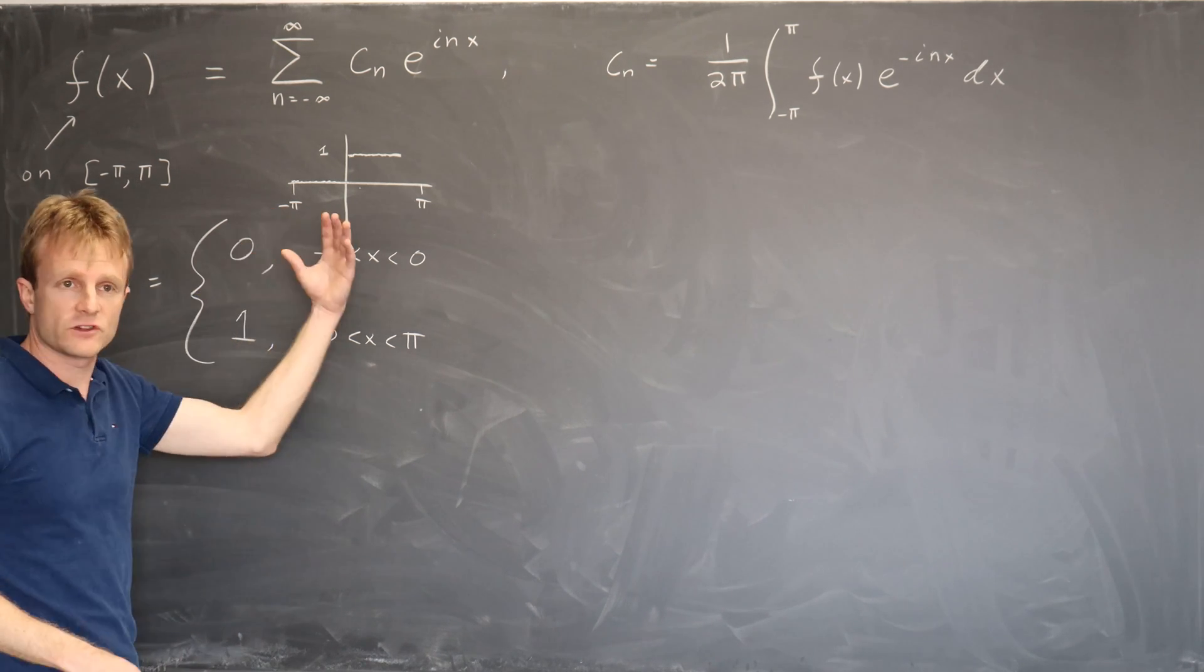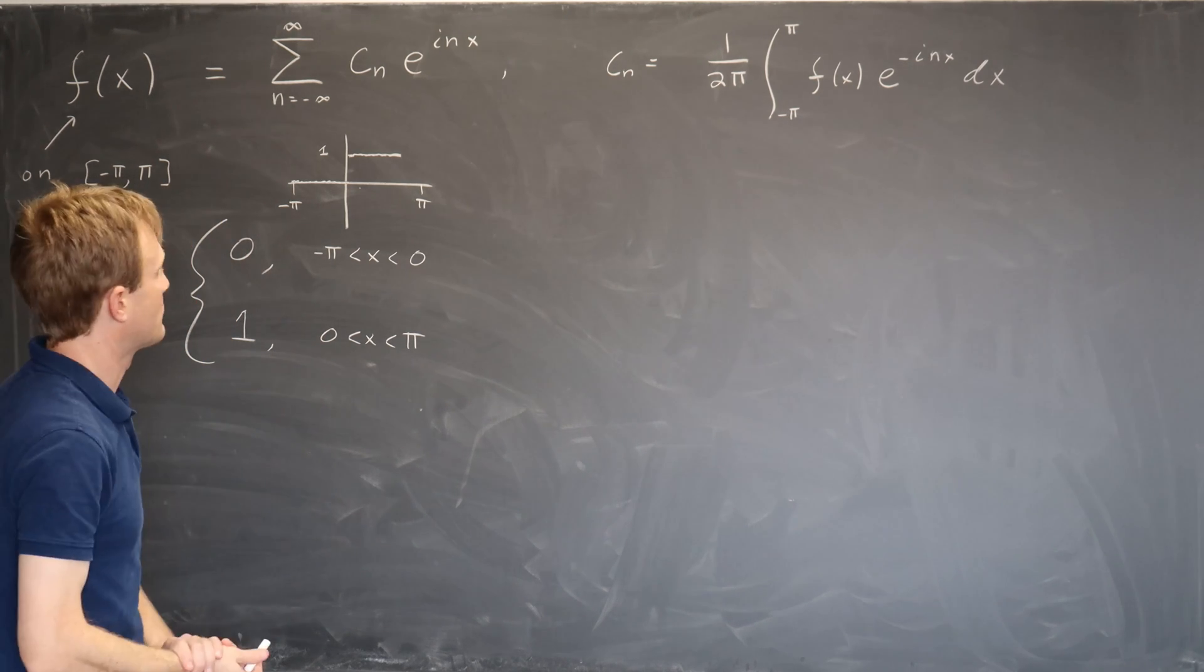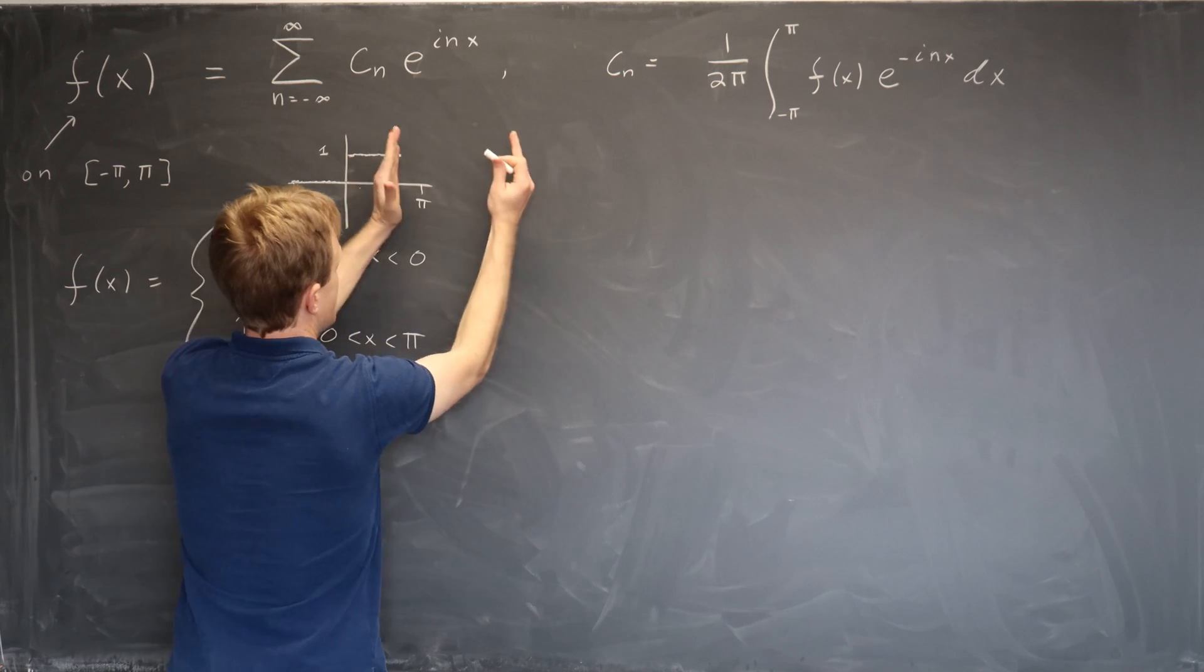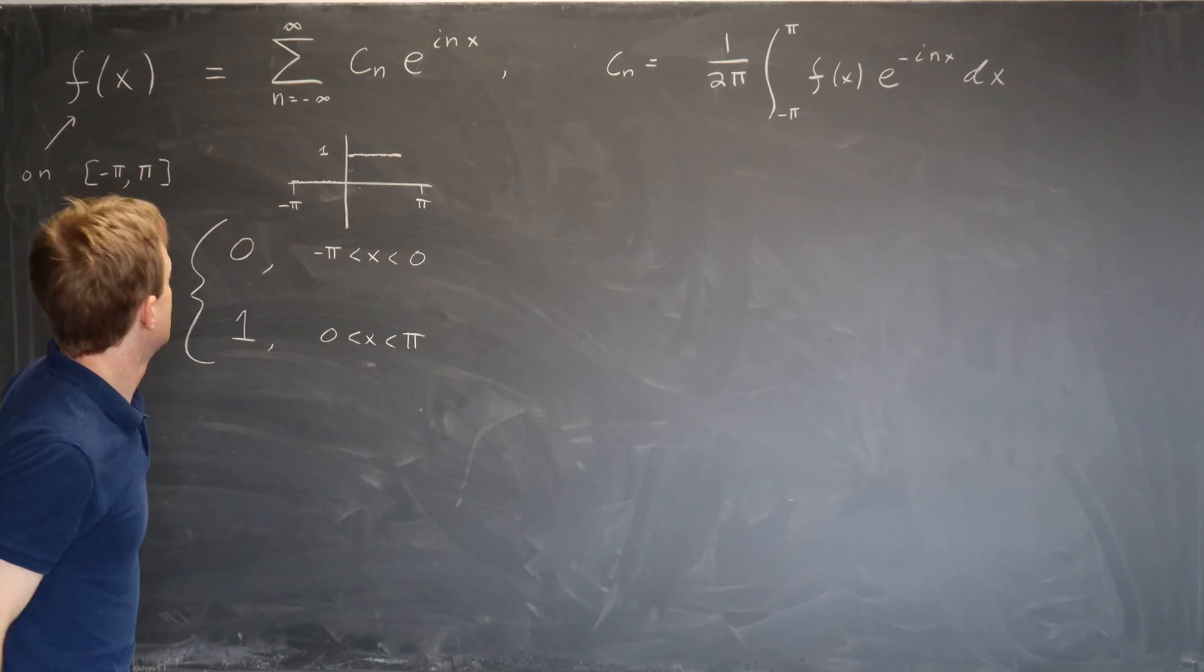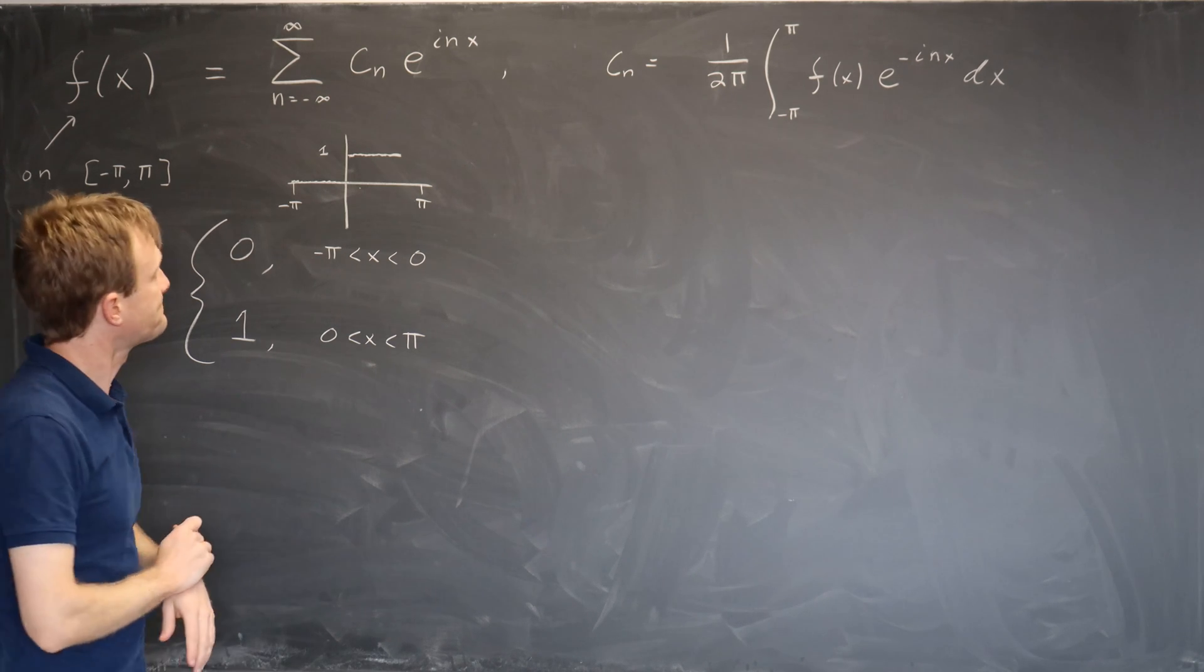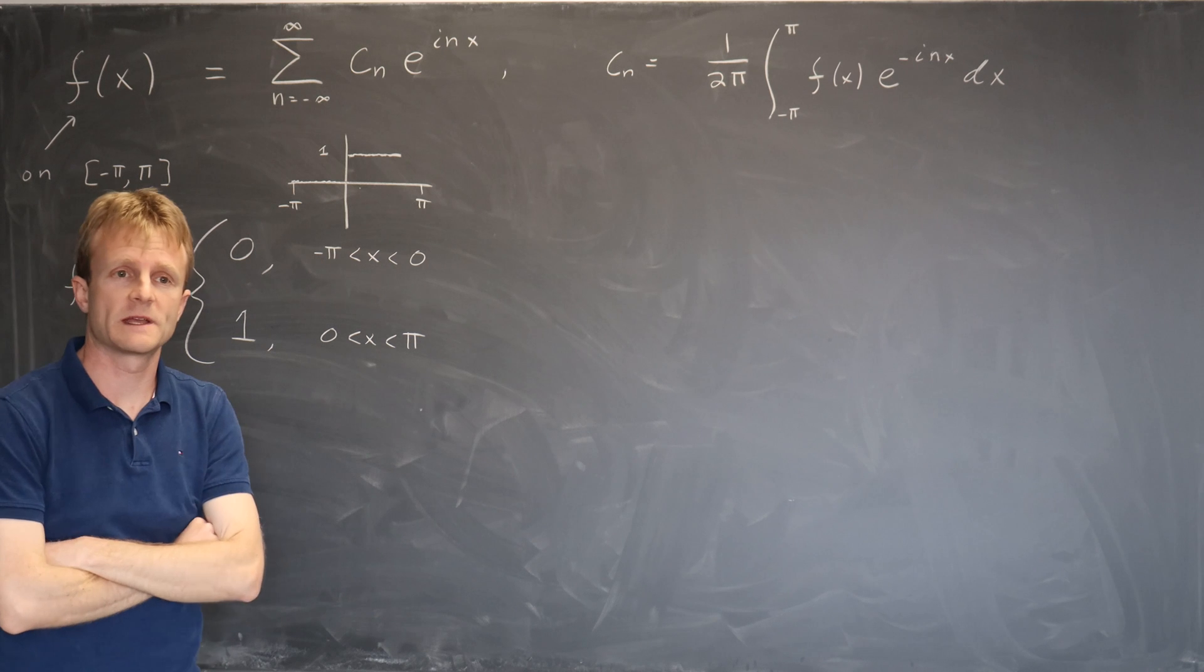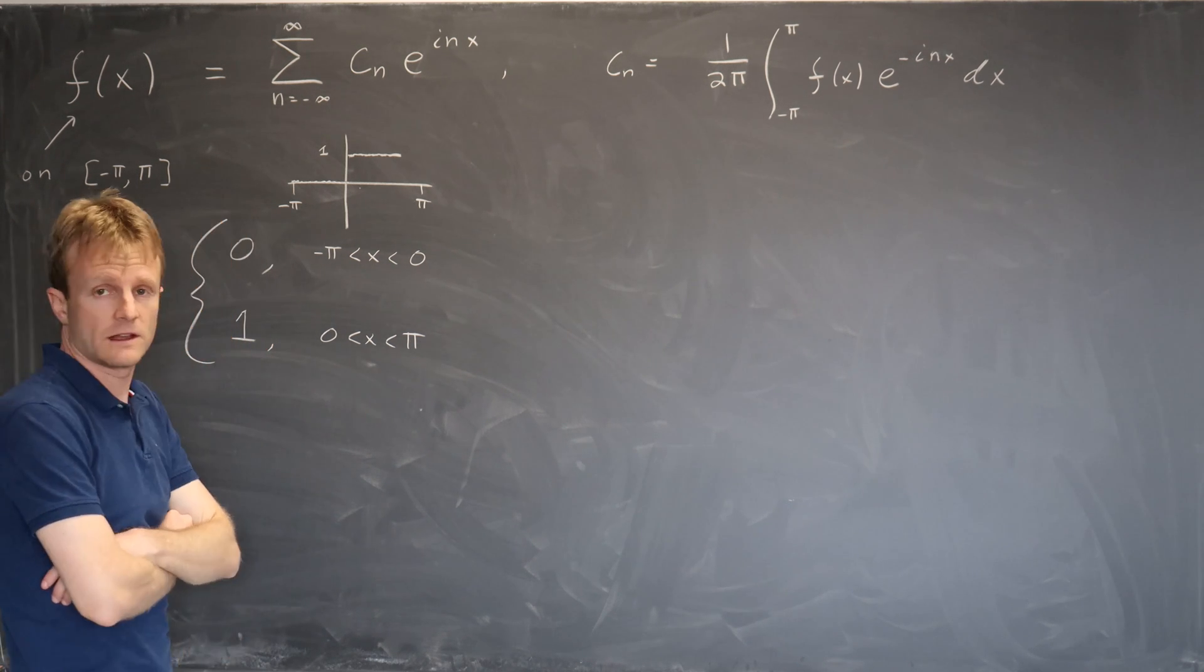So it's a step function if we think about it as restricted to minus pi to pi, or if we think about it as a 2 pi periodic function where we just make carbon copies of it moving to the right and to the left, then it's a square wave. And I asserted last time that it could be approximated as a sum involving the sine function, and now let's derive it.